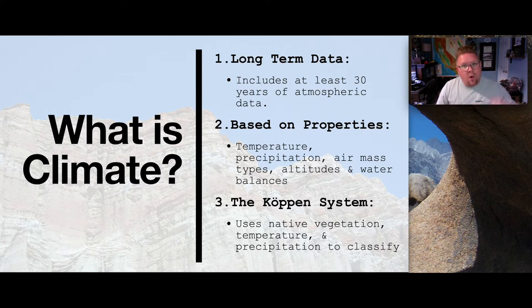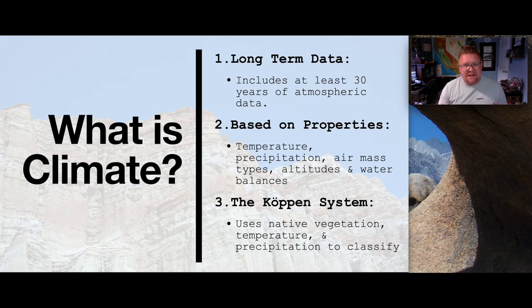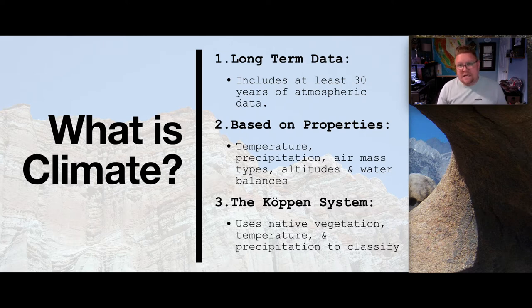When we see more and more events starting to change, that's when we have a problem. We have classifications for climate based on temperature, precipitation, air mass types, altitude, and water balances. But some areas are starting to be different, which means they need to be classified differently. We've classified them a certain way for 150 years, and now there are areas in Siberia that can have lush meadows that for the last human record have been covered in snow.